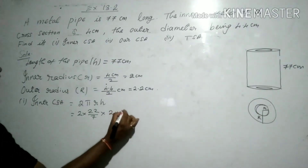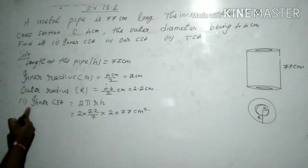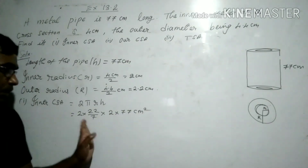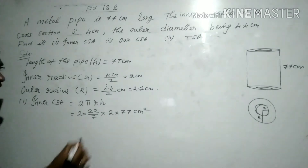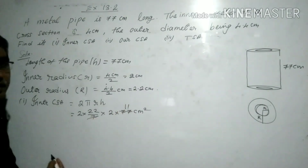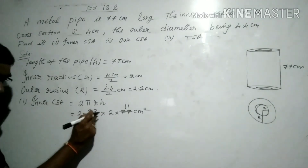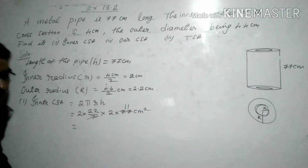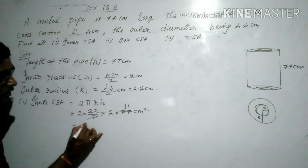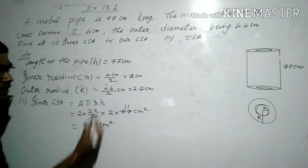The area comes in square units. So: 2 × 2 = 4, 4 × 22 = 88, 88 × 11 = 968. The inner curved surface area equals 968 centimeters squared.